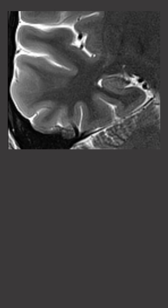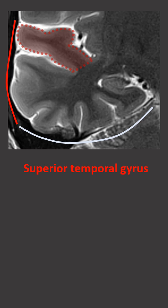The temporal lobe consists of a lateral surface and a basal surface. Along the lateral surface we find the superior temporal gyrus and the middle temporal gyrus.